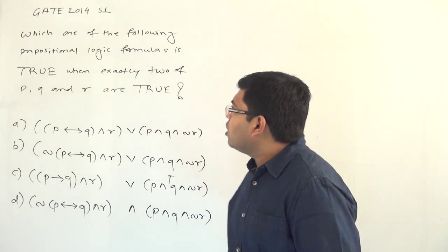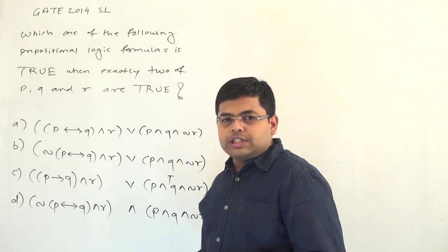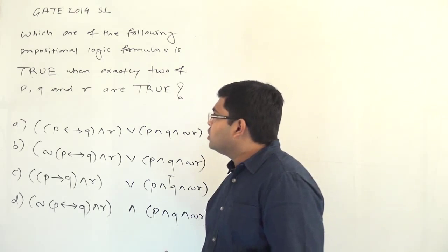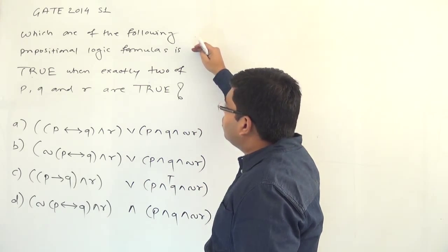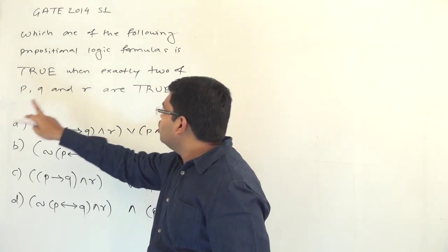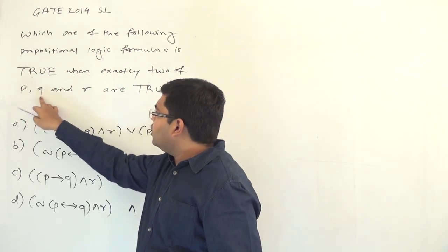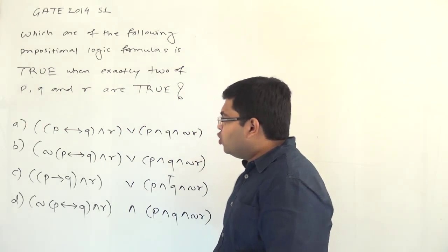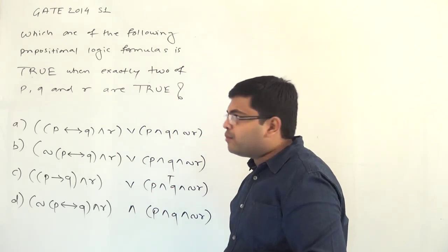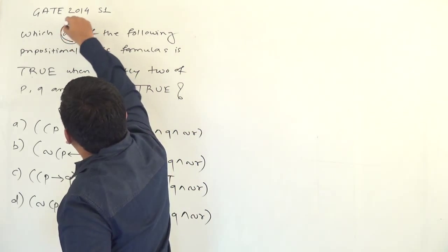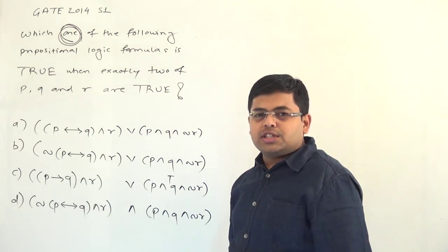Hello friends, we will solve this question which is from GATE 2014 session 1 from mathematical logic. The question asks which one of the following propositional logic formulas is true when exactly two of P, Q and R are true. Four different formulae are given and exactly one formula has to be selected as the answer, so this question has a unique answer.